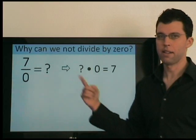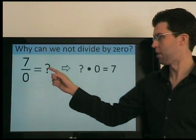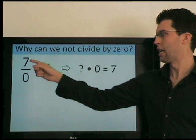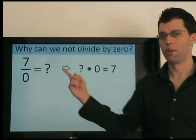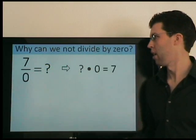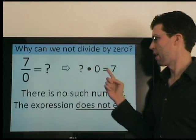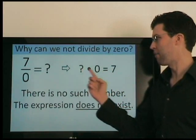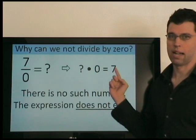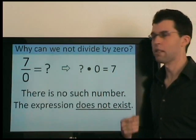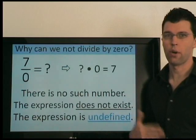Now for 7 divided by 0, the answer times 0 equals 7. So what number goes here? What number makes this true? Well, in fact, no number works. There is no such number that times 0 equals 7, because anything times 0 is 0, not 7. So we call this being undefined. There is no answer.